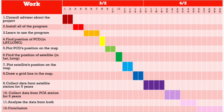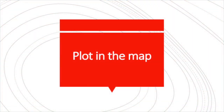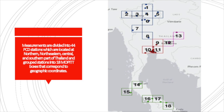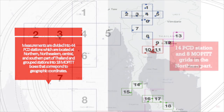This is our process plan across two semesters. Let me show you the map mentioned in the previous slide. Measurements are divided into 44 PCD stations located in the Northern, Central, Northeastern, and Southern parts of Thailand, grouped into 18 MOPITT grid boxes, as shown in the figure.